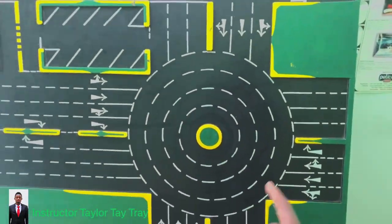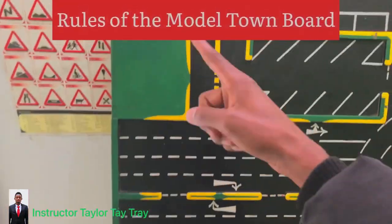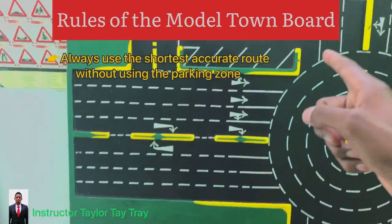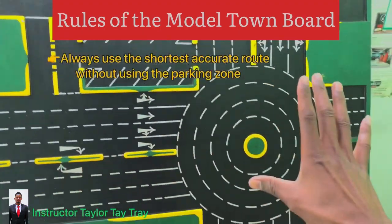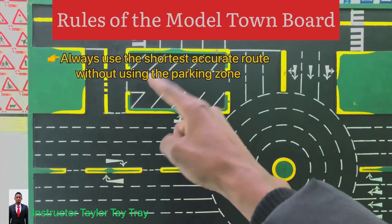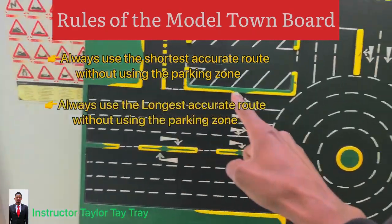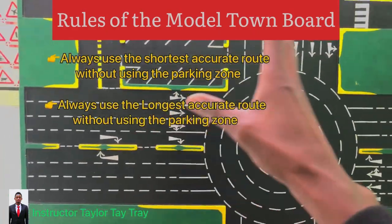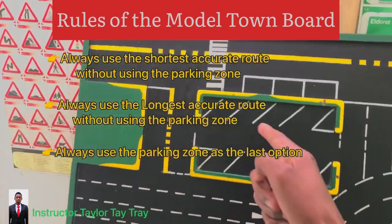This is the model turnboard. Before we go to the features, we have the rules. First rule is to use the shortest accurate route without using the parking zone. Second is to use the longest accurate route without using the parking zone. Third rule is to use the parking zone as the last option.